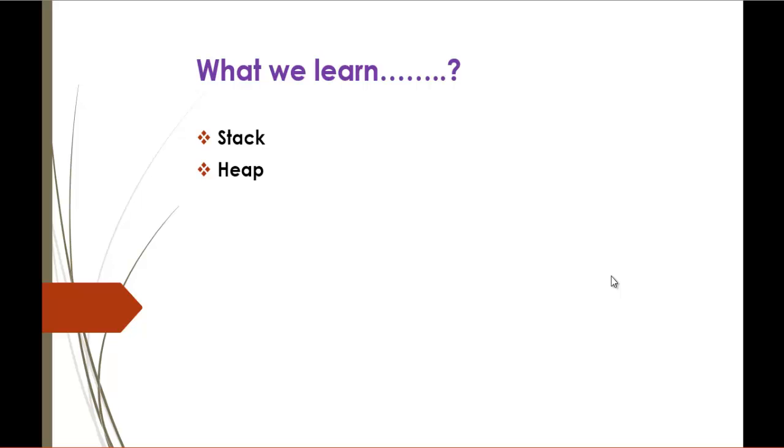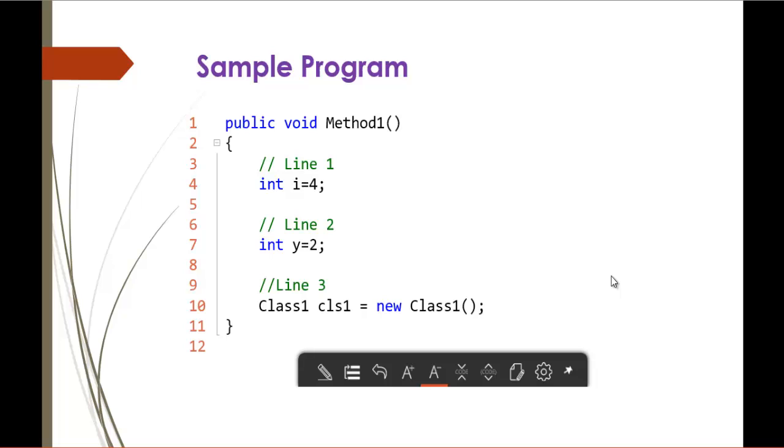To understand it clearly, I have a sample program with a method called method1. I have three lines of code. This is the starting point and this is the ending point of the method. Int i equals 4 is line 1, int y equals 2 is line 2, and I have initialized a class and created an object. To understand what is class and object, we will discuss this in a coming session. For now, just ignore it.